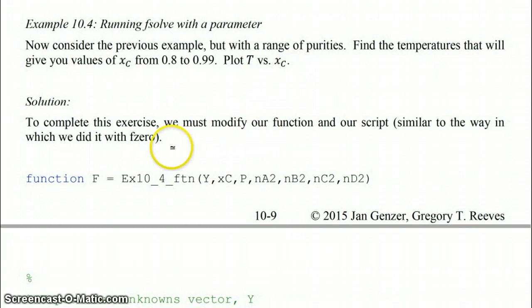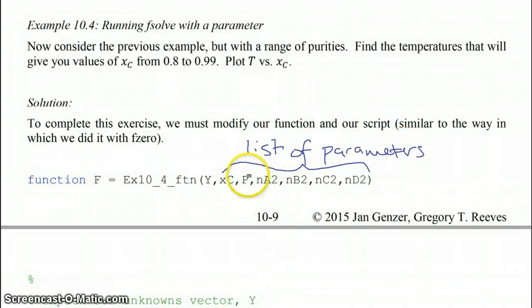To complete this exercise, we're going to modify first our function and then our script that we wrote previously in a similar way that we did with fzero. Before with fsolve, we had one output, F, which was our vector of outputs F of Y, and one input Y, which is our vector of unknowns. But now we're also going to have a list of parameters, which are like extra constants or variables that we want to pass into our function, the same way that we did with fzero.